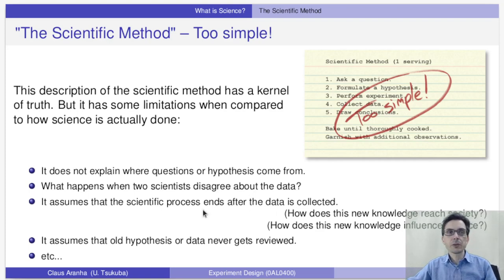We can see also some other limitations here. For example, the role of other scientists in the process, and the idea that knowledge generated by science changes over time. So, let's try to build a better framework to describe sciences in our mind.